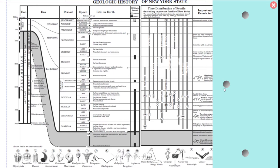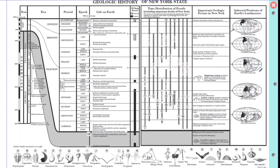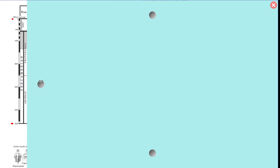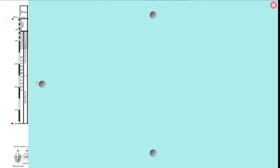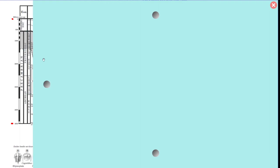Last is the geologic time scale, found on your reference table across two pages. On the left side is the actual time scale of Earth from 4.6 billion years to zero. All of time is split into the Precambrian and Phanerozoic eons. Those are further broken into late, middle, and early parts.